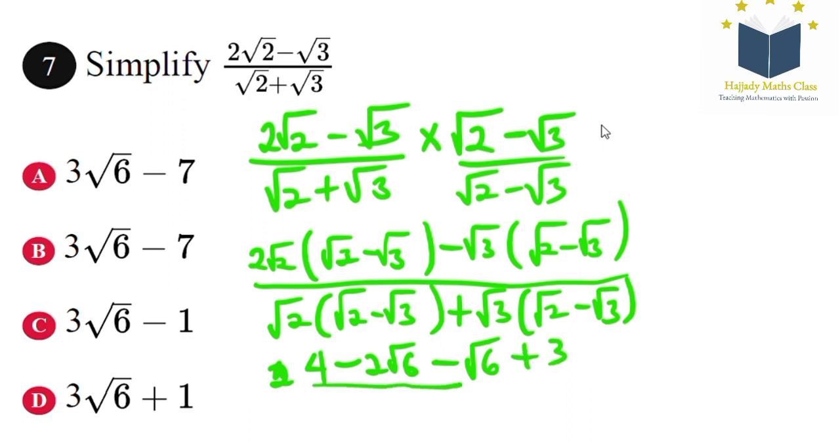For the denominator, √2 multiplied by √2 is 2, and √2 times √3 gives √6 terms. The numerator has 4 plus 3 which gives 7, minus 2√6 minus √6 gives minus 3√6. The denominator: 2 minus 3 equals minus 1.